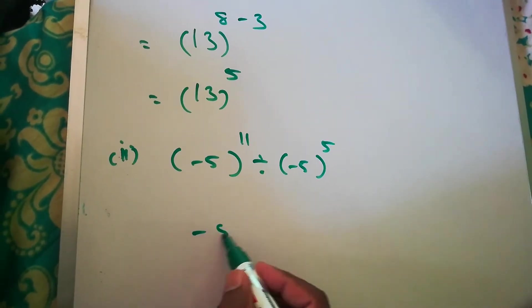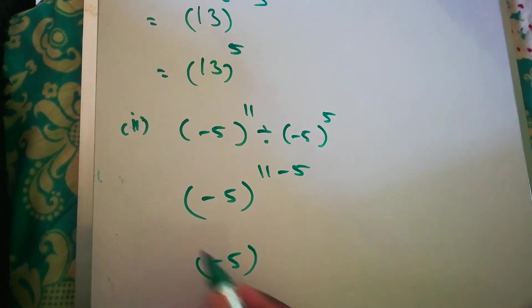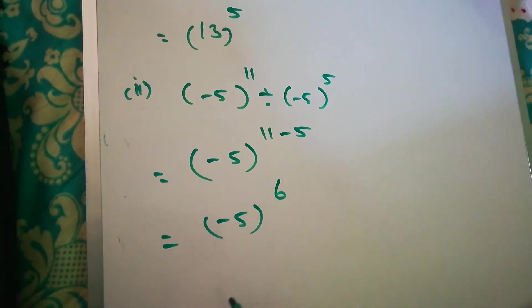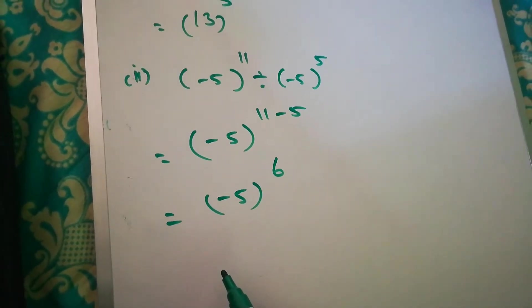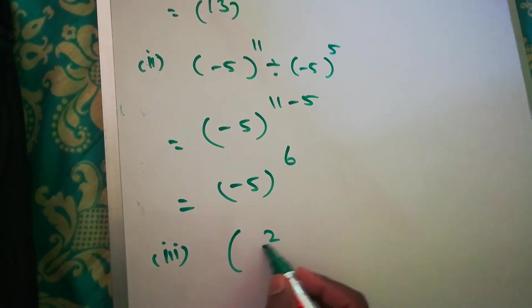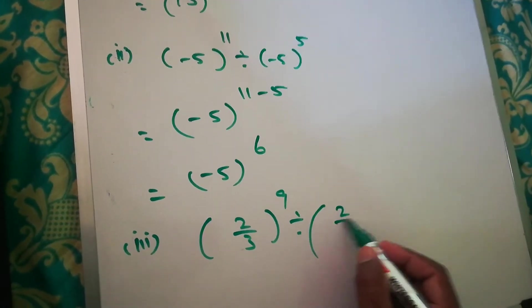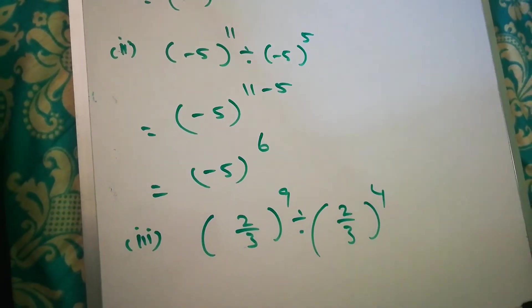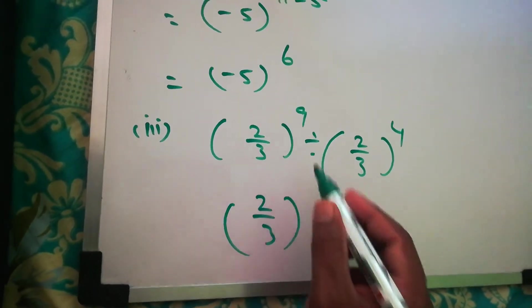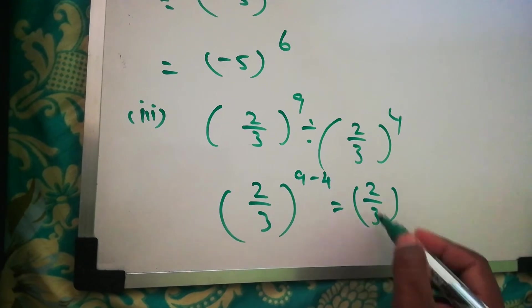So the exponent becomes 11 minus 5 equals 6, giving (-5)^6. The next one: (2/3)^9 divided by (2/3)^4. Division means minus, so (2/3)^(9−4).